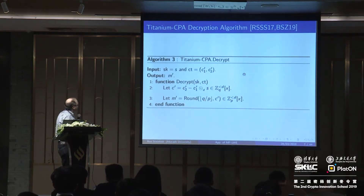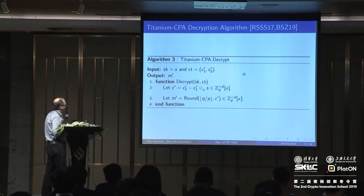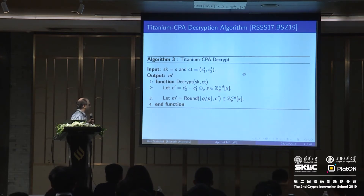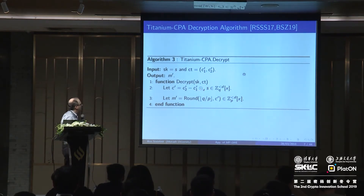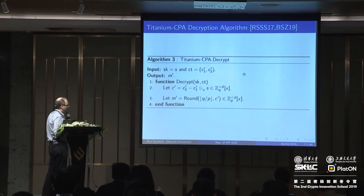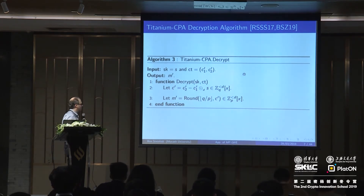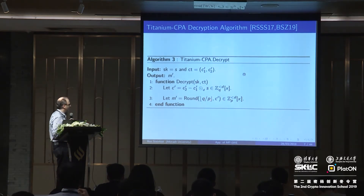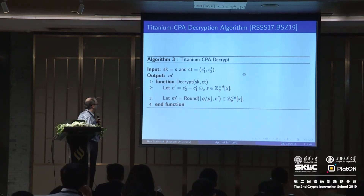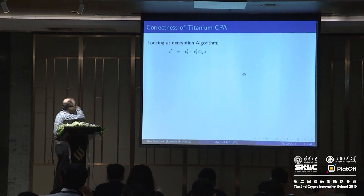To decrypt the ciphertext with the secret S, we take C2, subtract C1 times the secret using the middle product. What we end up with is something that should be close to the encoded message. We recover it by rounding off the errors from multiples of Q over P to get the message.